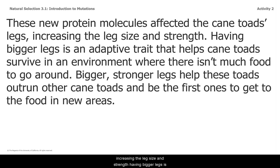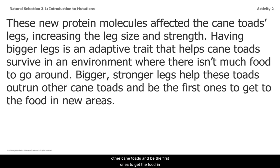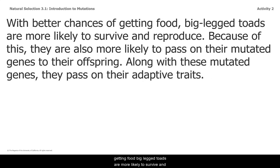Having bigger legs is an adaptive trait that helps cane toads survive in an environment where there isn't much food to go around. Bigger, stronger legs help these toads outrun other cane toads and be the first ones to get to food in new areas. With better chances of getting food, big-legged toads are more likely to survive and reproduce, and therefore more likely to pass on their mutated genes to their offspring.